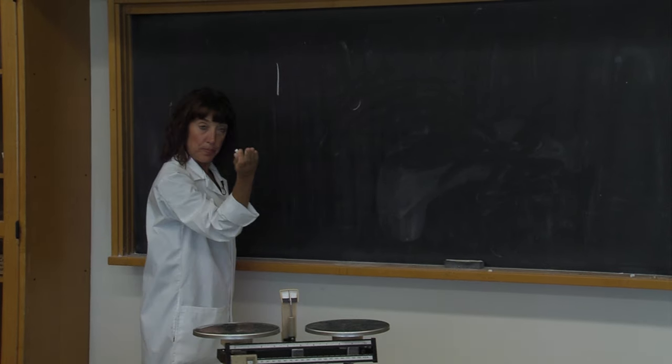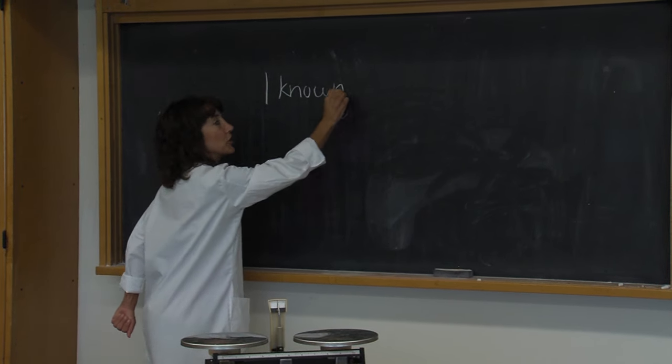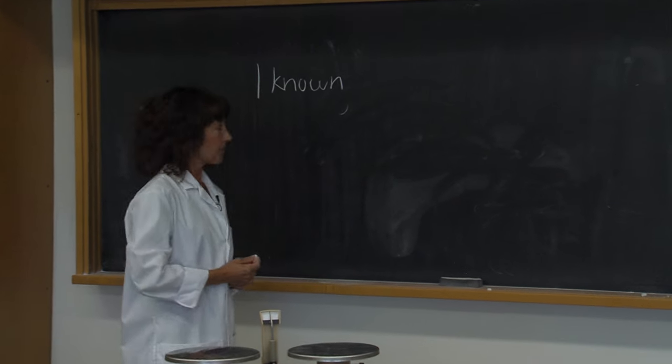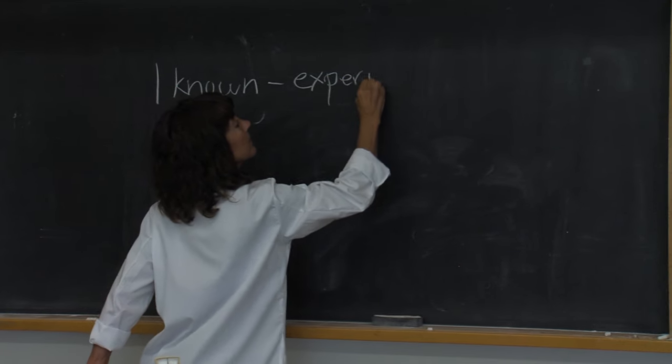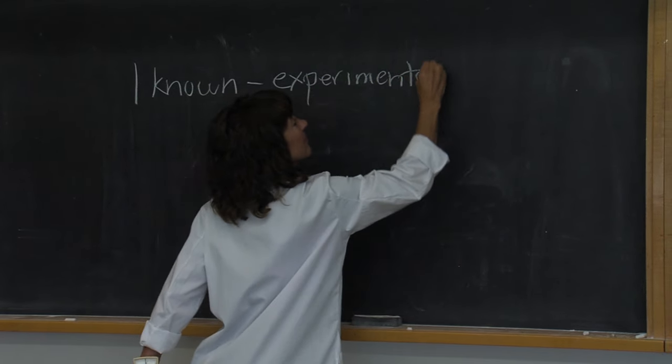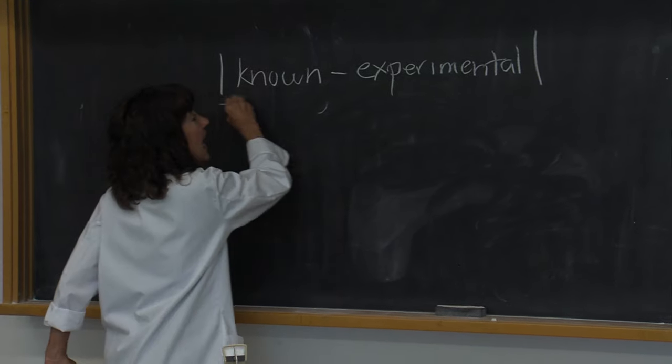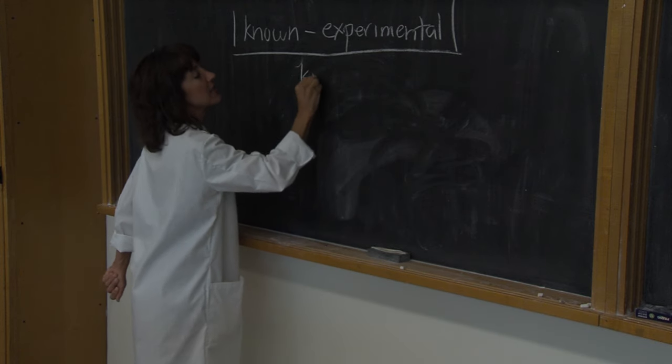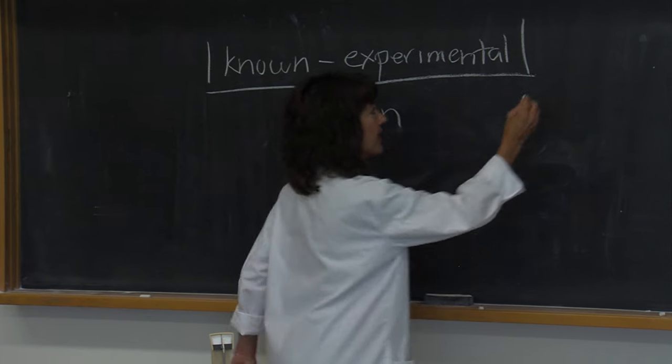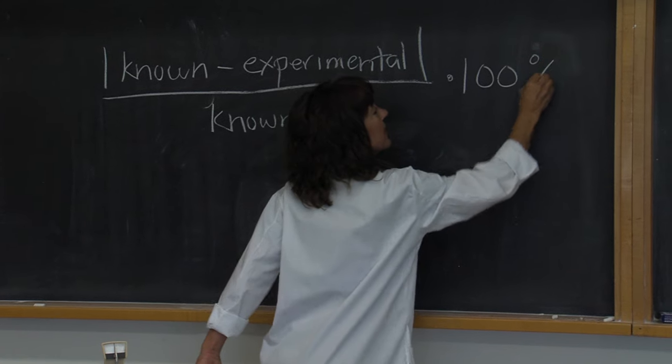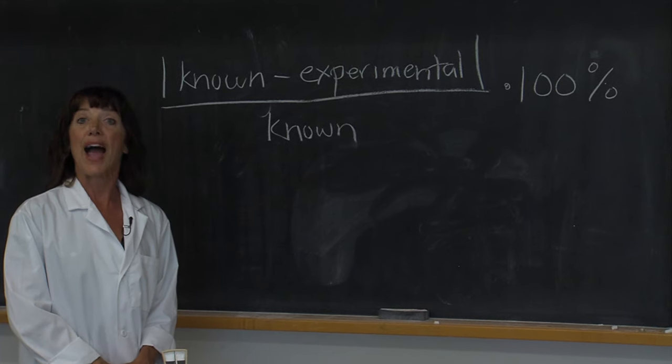To do so you will take the absolute value of the known value for density of your block minus your experimental results for density. And please note that this is the absolute value of that. And you will divide that by the known value. Once you've got a value for this, you will multiply it by 100, which gives you the percent. And once again, this quantity is called percent error. It lets you know how accurate your results were.